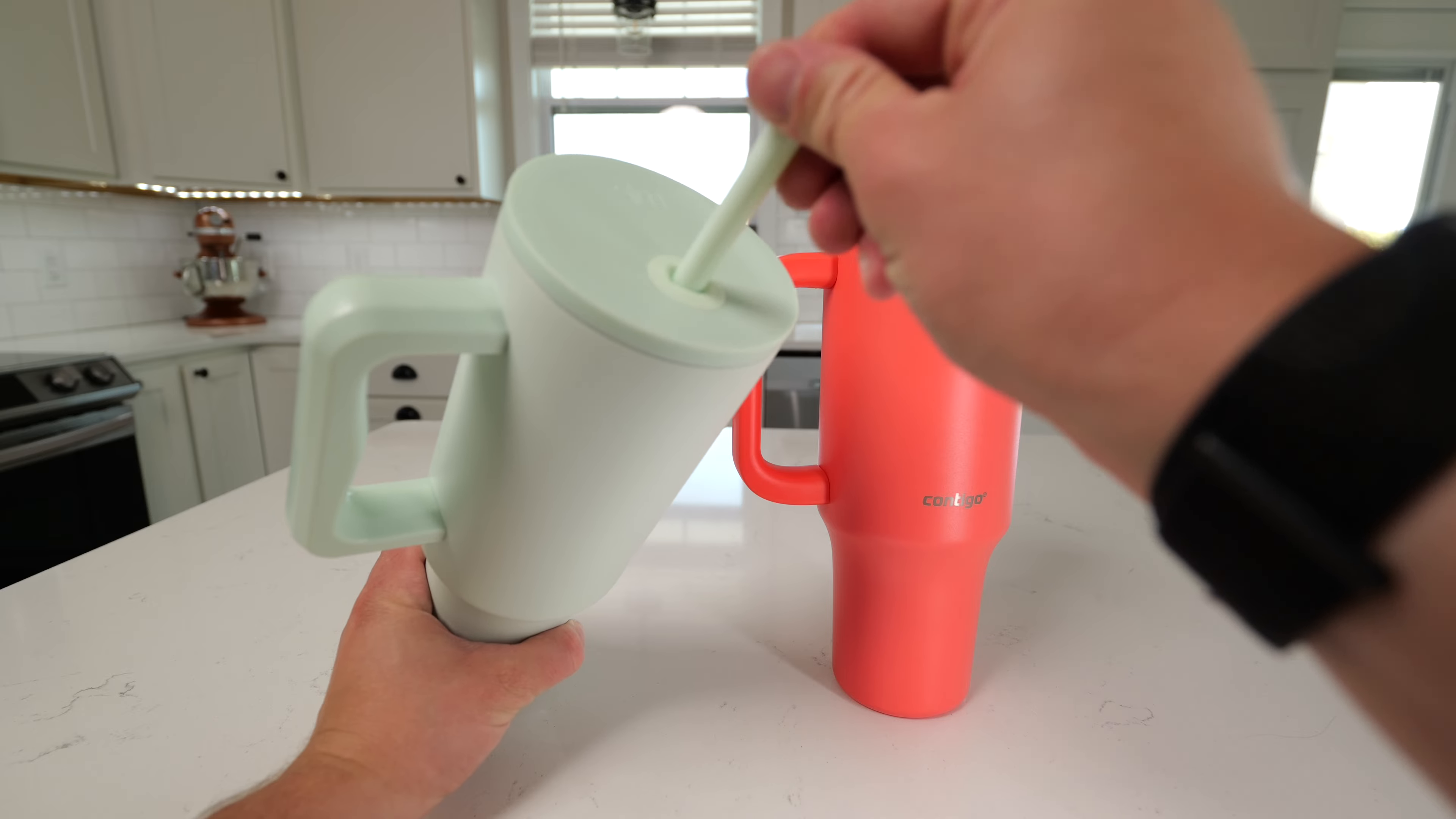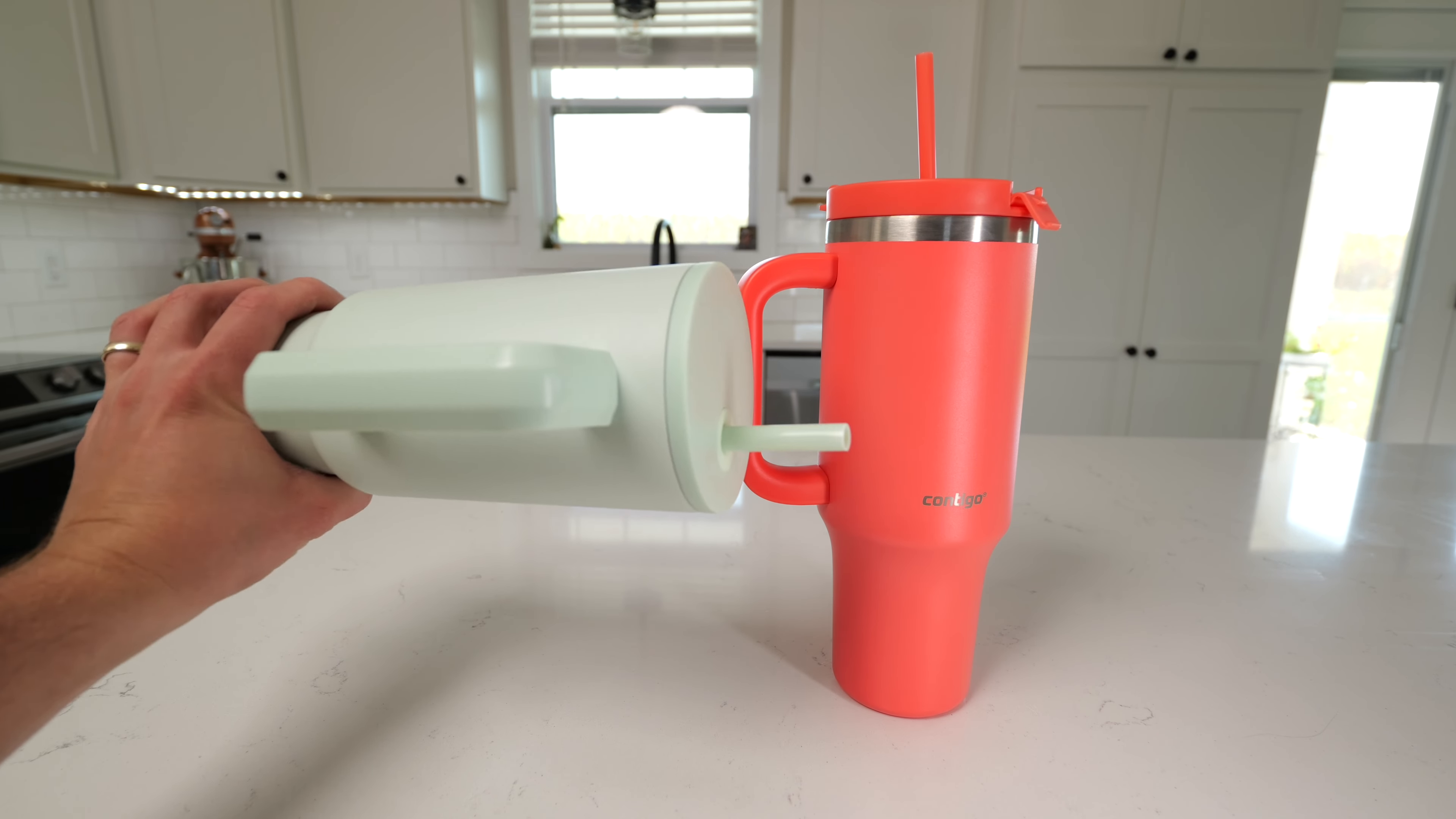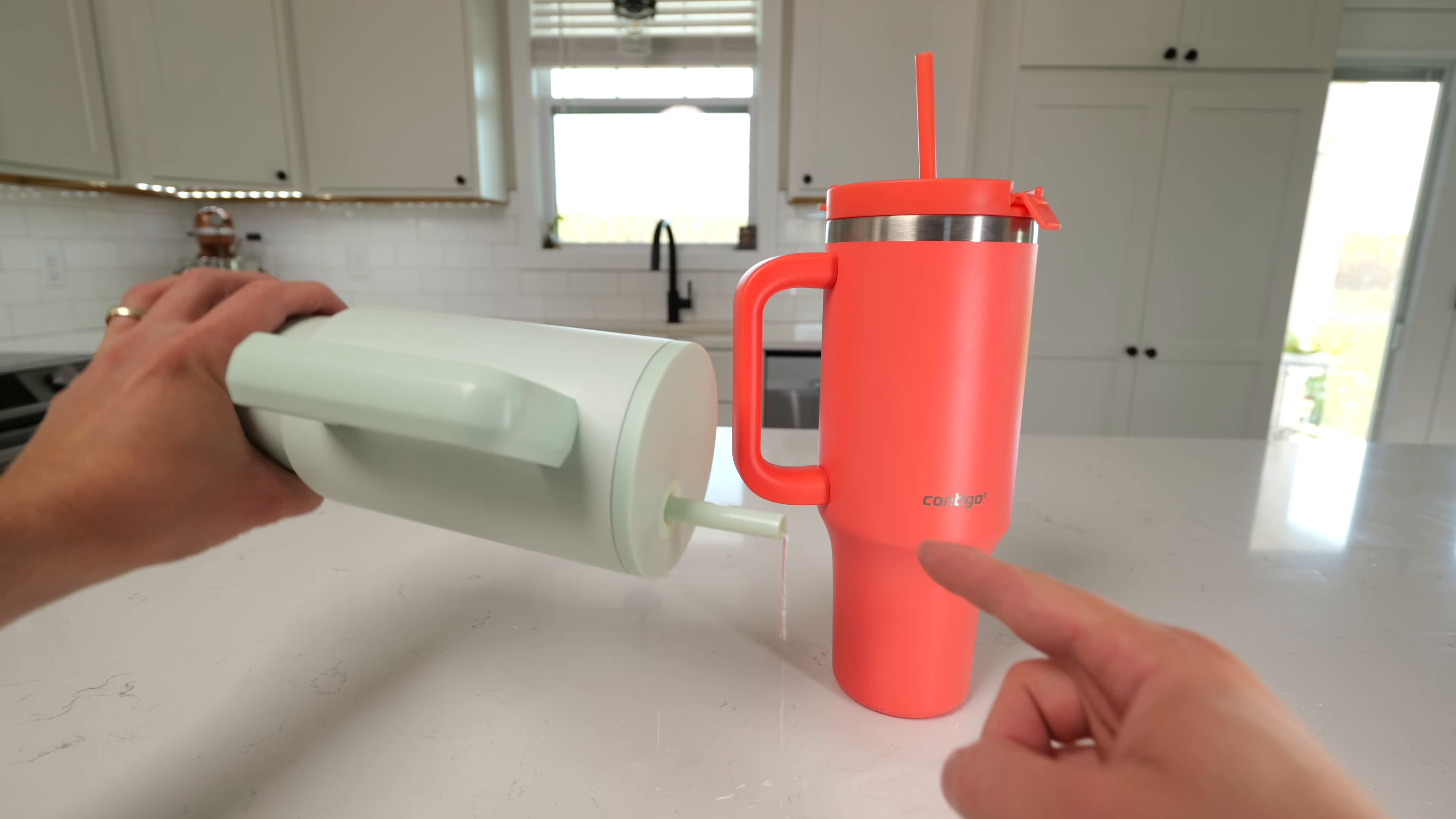The Simple Modern one has a straw that goes all the way through, just like the Contigo one, and this one also is considered leak-resistant whenever you flip it over on the side. Water can come out the straw.